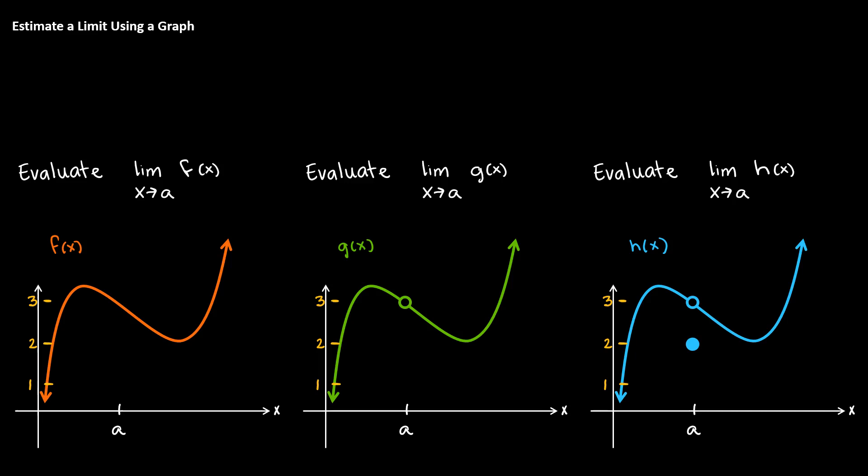So all of the functions are similar except for what's happening right at a, and we are investigating the limit when x is approaching a. For f of x, we can see that the function behavior is sending us to the output 3.